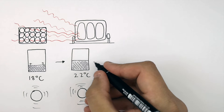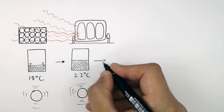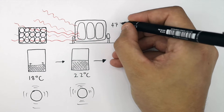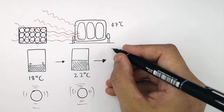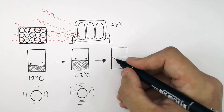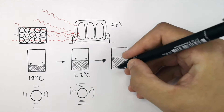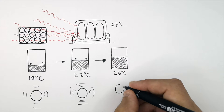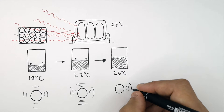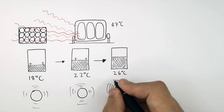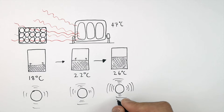As there is more energy being transferred from the radiator's thermal energy store into the object's thermal energy store, the object's temperature will increase. The object is now at 26 degrees Celsius, which means there's going to be more energy in the object's thermal energy store. That in turn means there is more energy in the particles' kinetic energy store, and the particles are vibrating more on a fixed point in this solid.